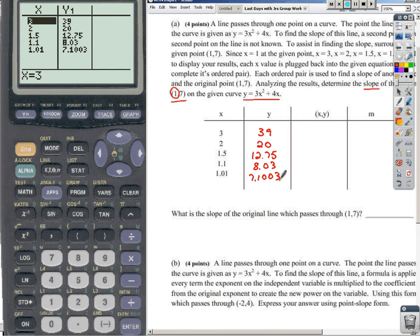Now once we have an x and a y, we have an ordered pair. So when x is 3, y is 39. Our ordered pair is 3, 39. When x is 2, y is 20. Our ordered pair is 2, 20. And we can fill in this next column here.